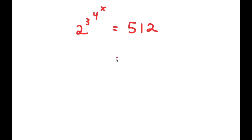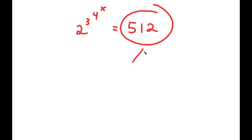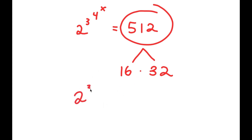To solve this, I'm going to first start by rewriting 512. So 512 is the same thing as 16 times 32. And now I can write this as 2 to the power of 3 to the power of 4 to the power of x is equal to 16 times 32.